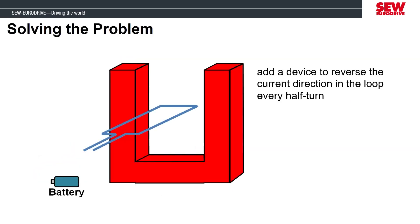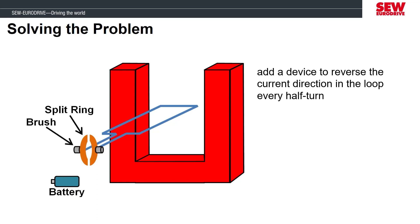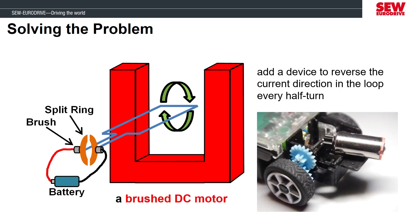To fix this problem with not being able to create a full rotation, we need to add a device that will reverse the current flow every half turn of the wire loop. This is called a split ring — a ring cut down the middle — which keeps the current flow in the same direction as the loop rotates. We need to conduct electricity to the ring, so we add graphite cylinders called brushes. The brushes slide against the ring so that the wires connecting to the power source don't twist and break off as the loop rotates.